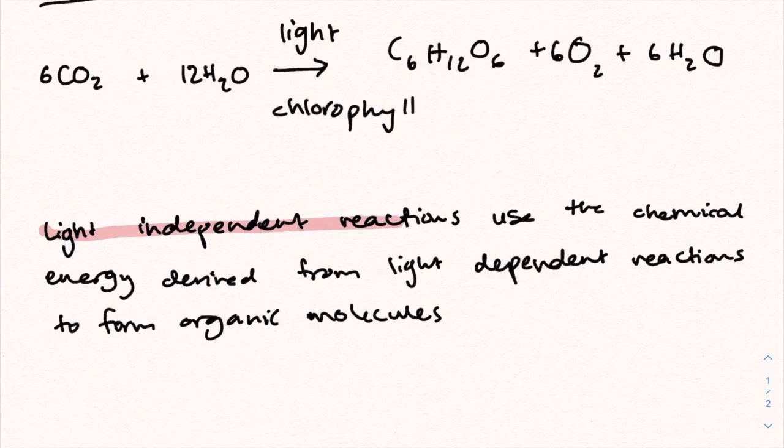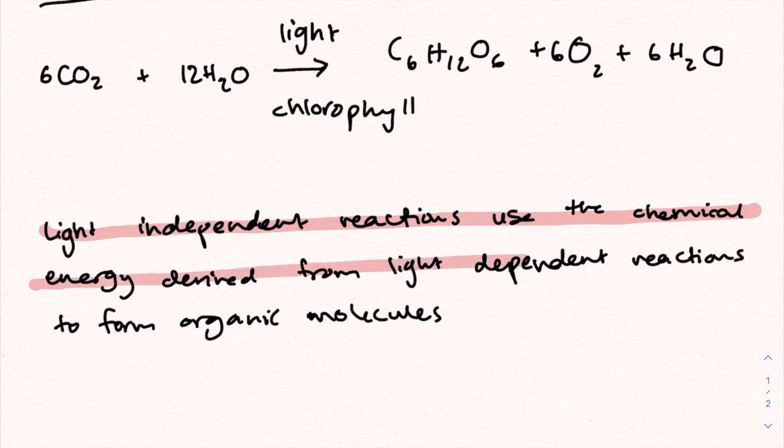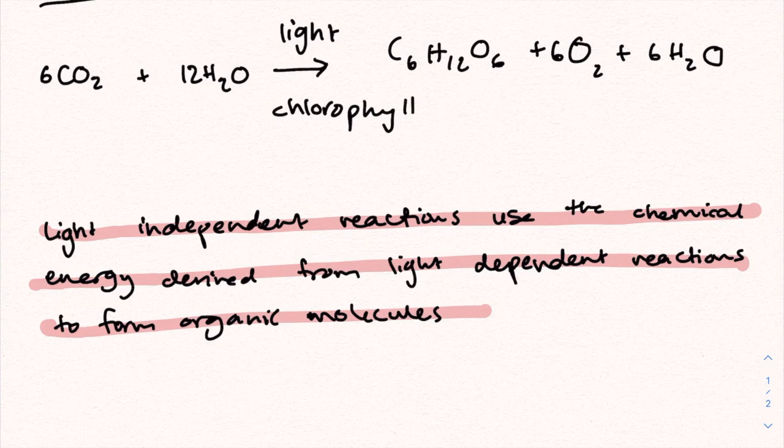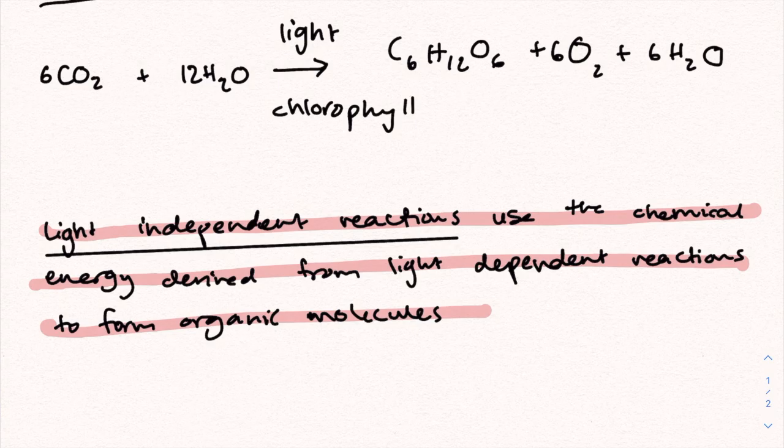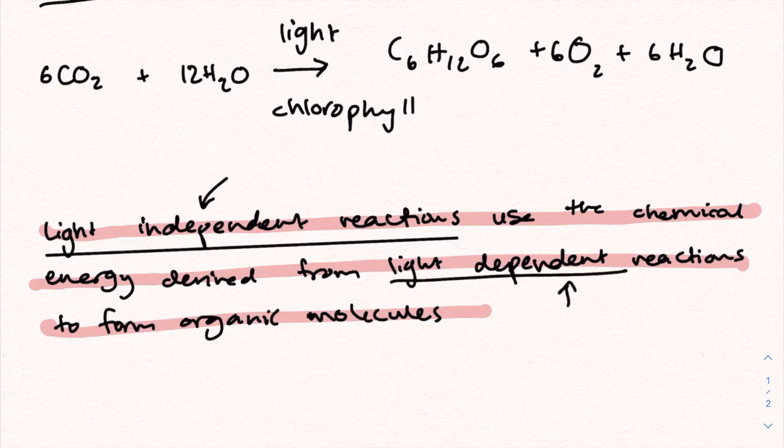In short, light-independent reactions use the chemical energy derived from light-dependent reactions to form organic molecules. And this is quite obvious because of the name, but I just want to make it really explicit. Light-independent reactions occur in the absence of light, or they don't necessarily need light to happen, whereas light-dependent reactions are dependent on light, meaning that light must be present in order for these processes to take place.